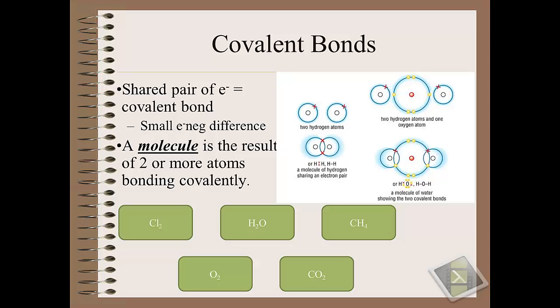When they share the electrons, they do so in such a way that's going to enable each other to complement and increase their stability in accordance with the octet rule. And so the particle that's formed is known as a molecule.